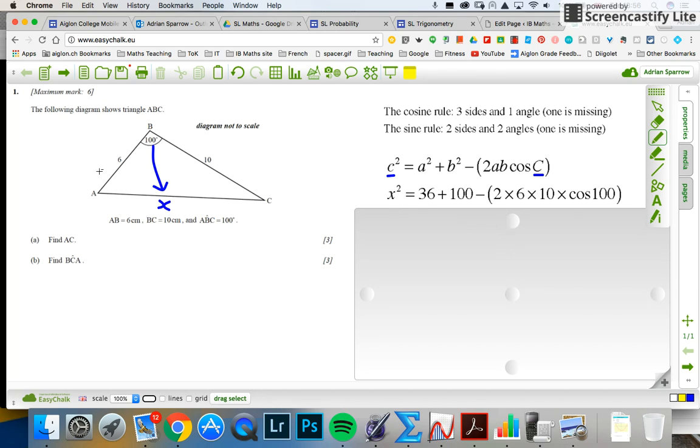A and B, it doesn't matter. So I've got six squared, which is 36, 10 squared, which is 100. Take away, and I'm going to put this into brackets. I don't think the formula sheet has this part in brackets, but I'm going to put all this in brackets. So two times six times 10 times cosine 100.